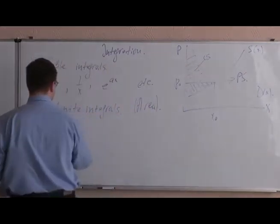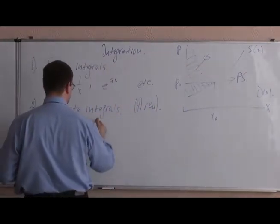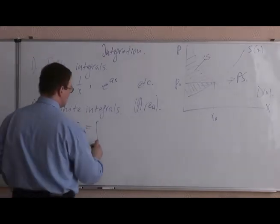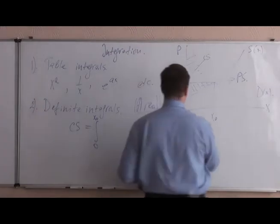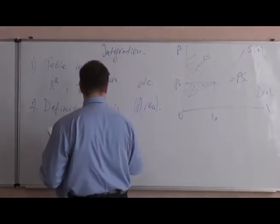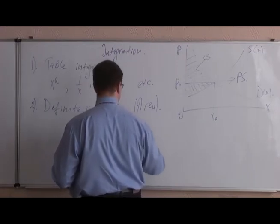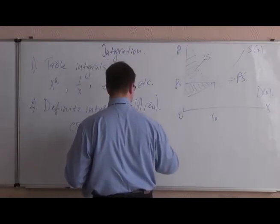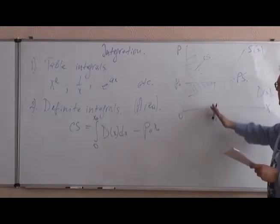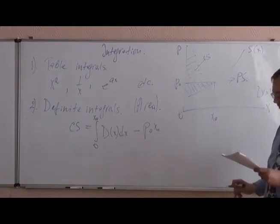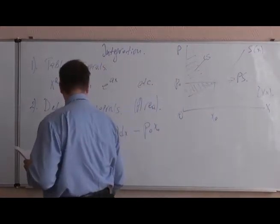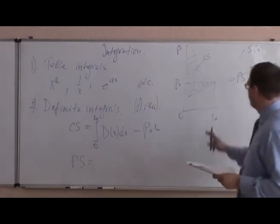You have to find this if you know those two functions. You can find this using the integrals. So, basically, the consumer surplus is found as the integral from 0 to x0, from 0 to this point, of the demand function minus p0 dx. So, this is going to be the area under this curve minus this rectangle.